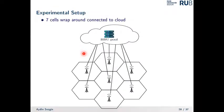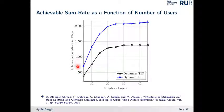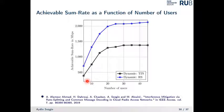To illustrate the gains, we applied this approach to a seven-cell system with base stations equipped with four antennas, 28 users, maximum power of 30 dB, and a standard path loss model. The achievable sum rate in megabits per second is shown as a function of the number of users, comparing treating interference as noise (TIN) versus rate splitting. As the number of users increases and interference grows, the performance gap between TIN and rate splitting increases significantly, showing it is quite beneficial to apply rate splitting.